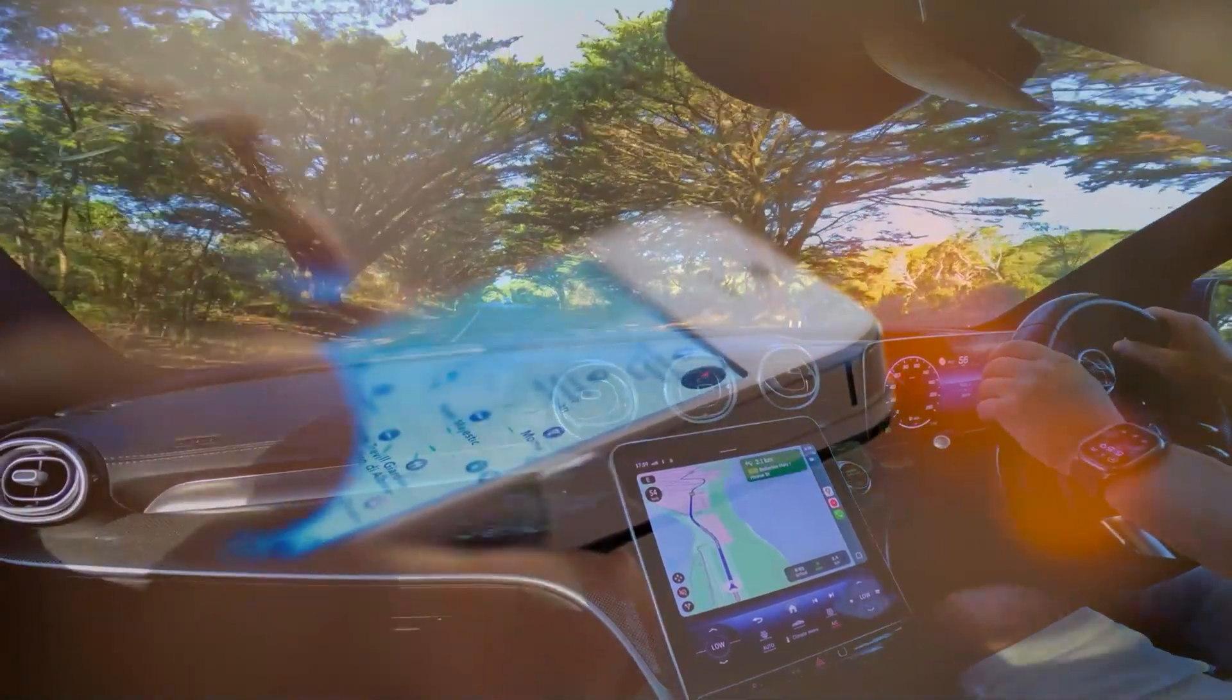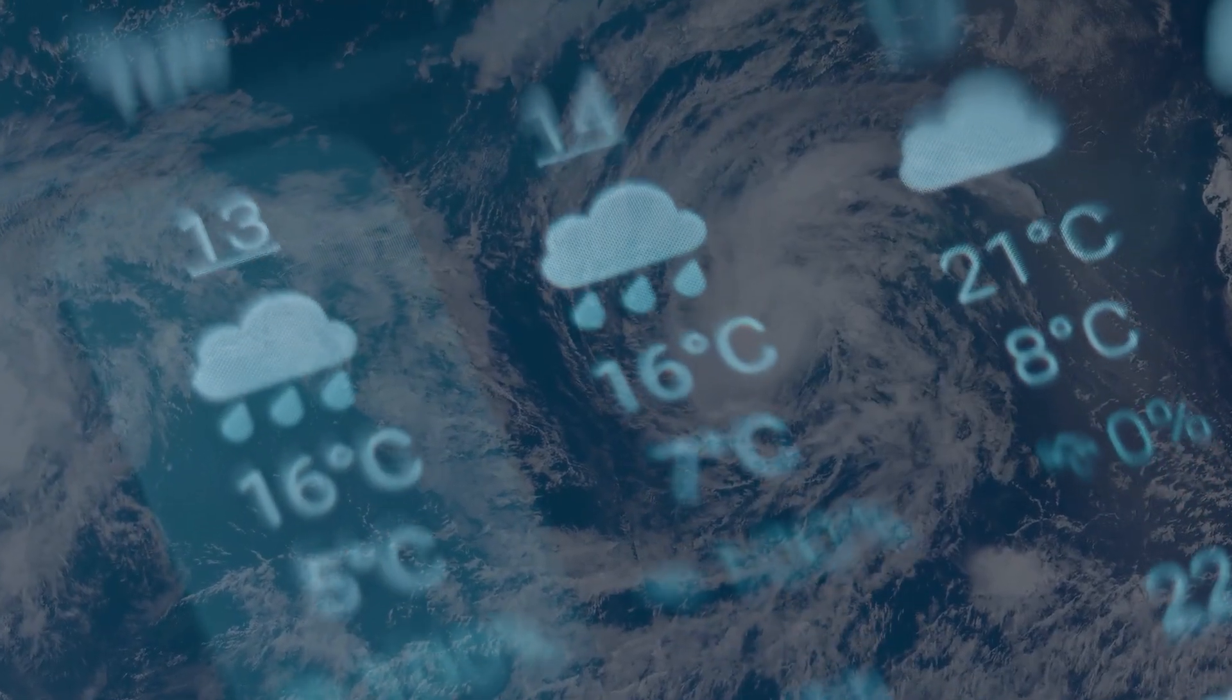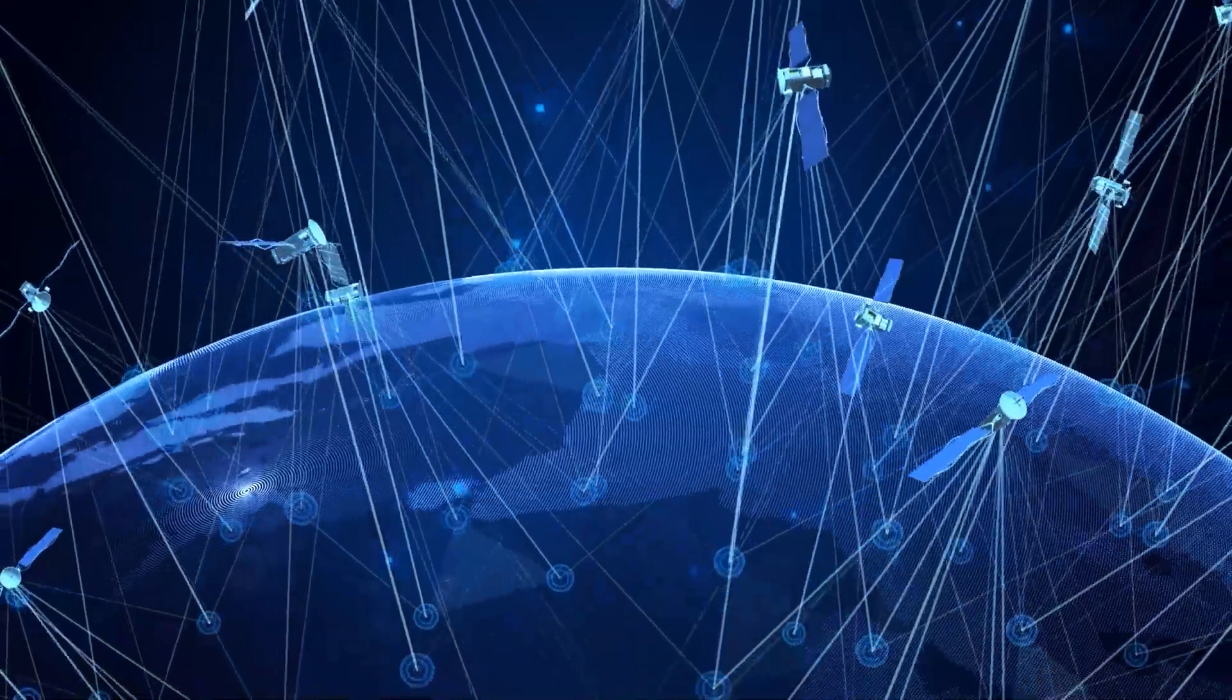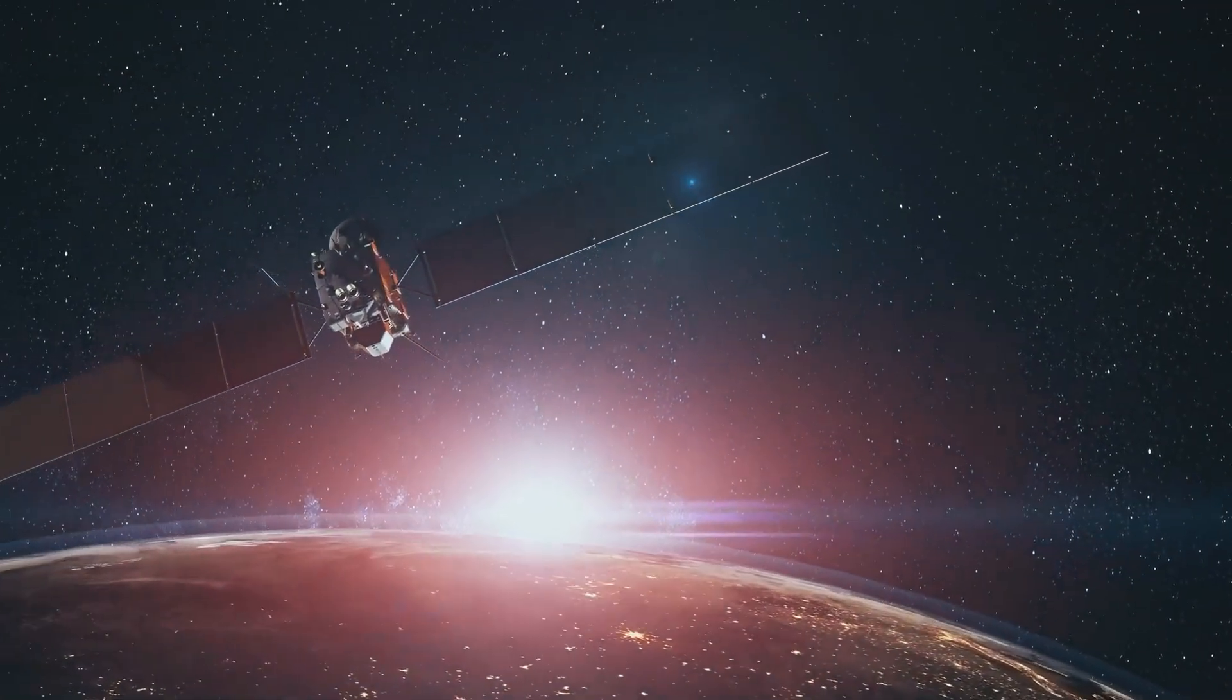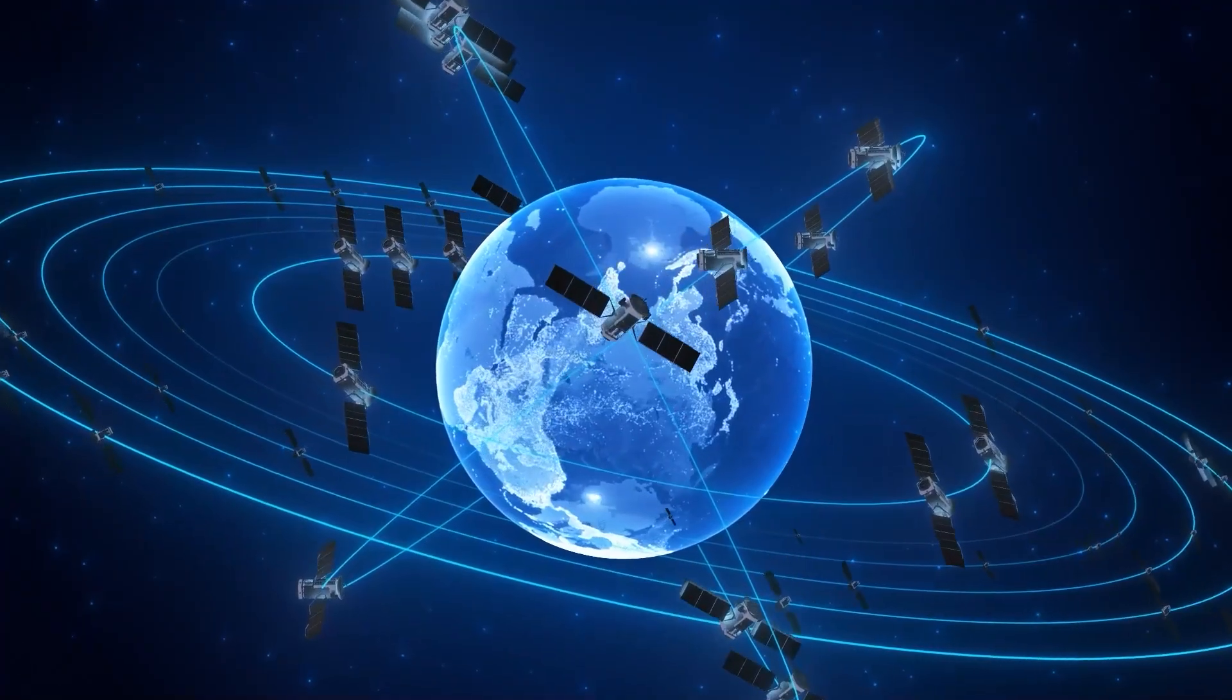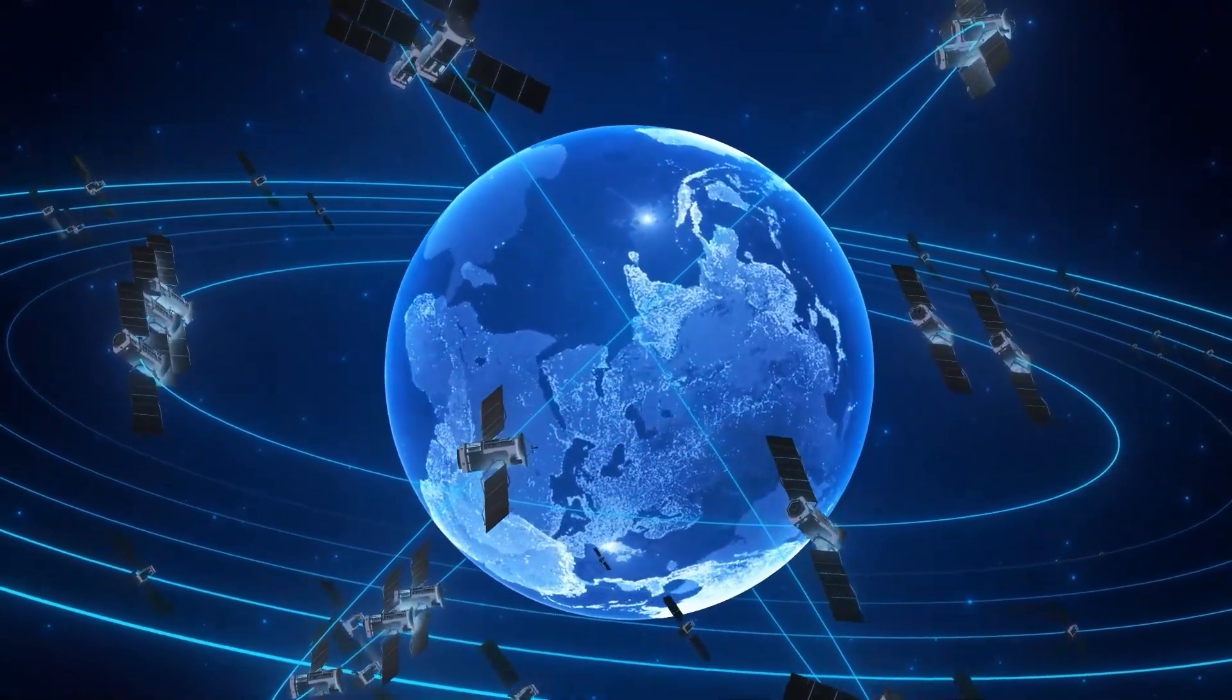Our daily lives are woven into the fabric of orbital mechanics. GPS guides our cars and smartphones. Weather satellites forecast storms saving lives and property. Communication satellites connect continents. And national defense systems rely heavily on eyes and ears in orbit. All of this depends on a stable, predictable, and clear orbital environment.